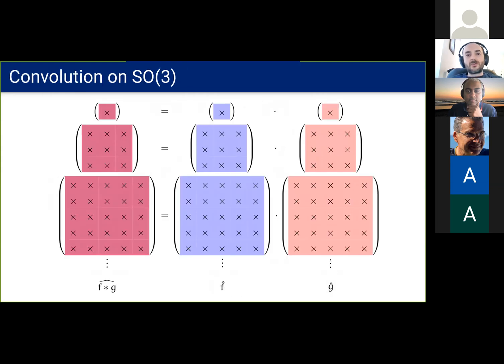Now the spectrum of the convolution between functions on SO(3) can be computed by multiplying the corresponding matrices at each degree.